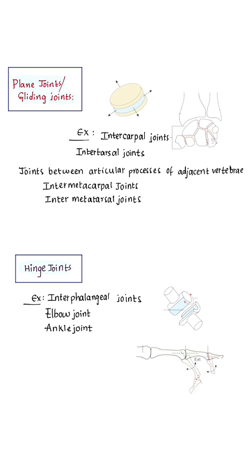Plane joints or gliding joints: the articular surfaces are plain. Examples include intercarpal joints, intertarsal joints, intermetacarpal joints, intermetatarsal joints, and joints between articular processes of adjacent vertebrae.